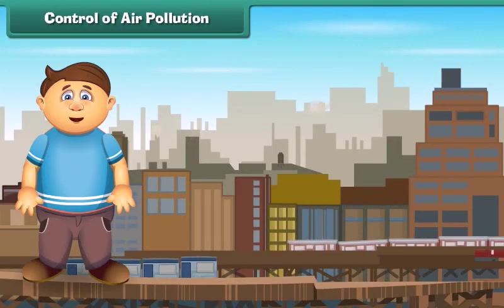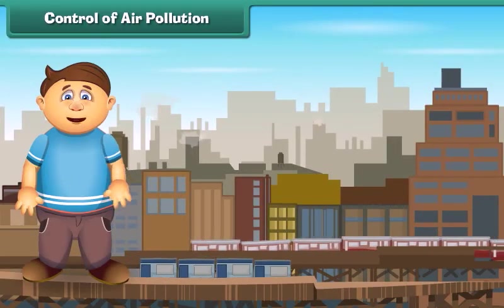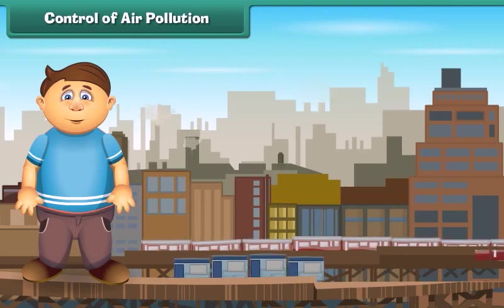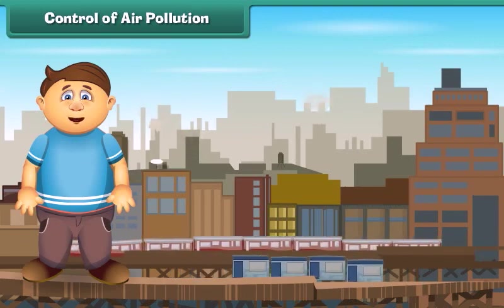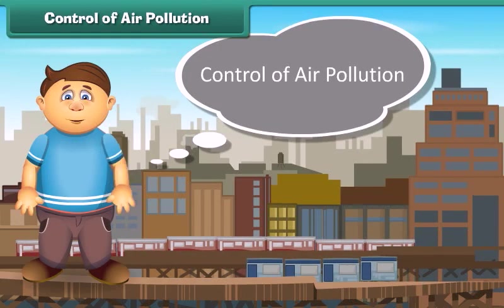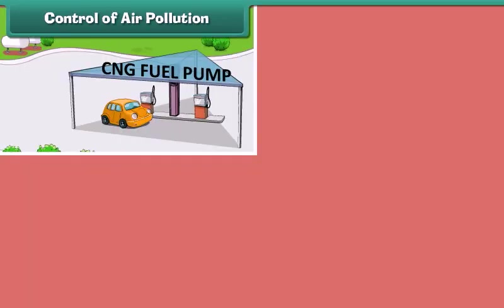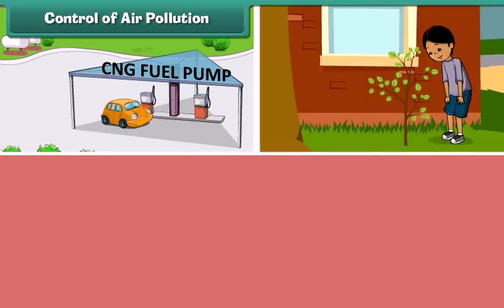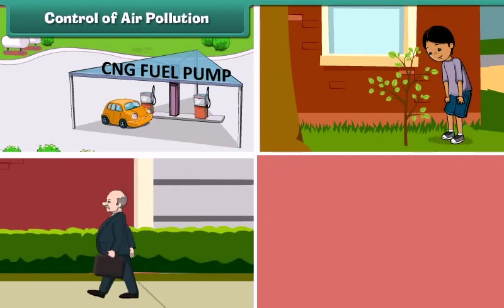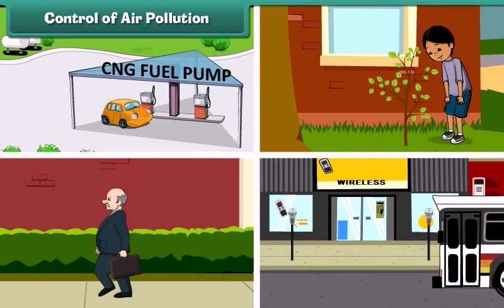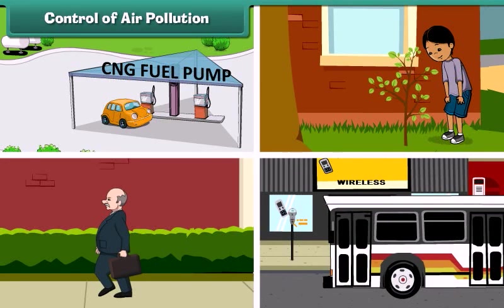Now the question is, how can we control air pollution? There are many things we can do. It can be controlled by using clean fuels like CNG in vehicles and industries, planting new young plants, preferring walking over driving, and using public transport for transportation.